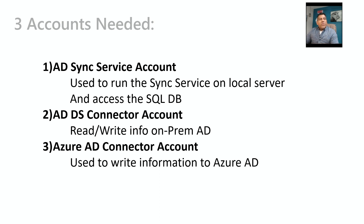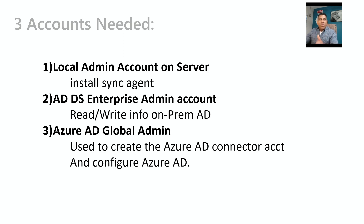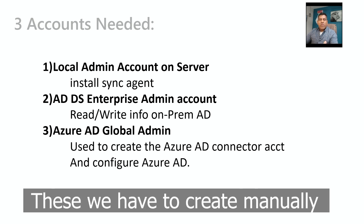The third account is the Azure AD connector account, used to write information into Azure AD. Those are the three accounts we're going to need. We also need a local admin account on the server because we need to install an agent there. That server can be an existing Active Directory domain controller, or a brand new member server joined to the Active Directory where you install the agent.